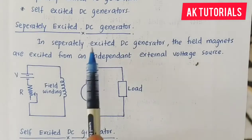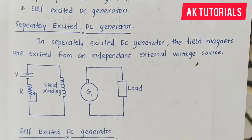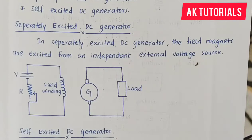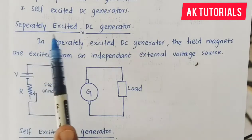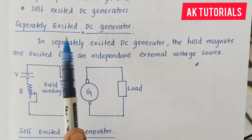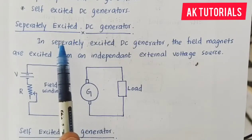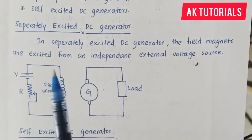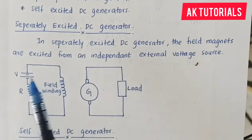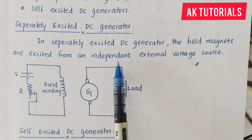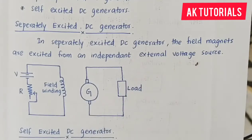In a separately excited DC generator, the field magnets are excited from an independent external voltage source. This external voltage source supplies the field, making it a separately excited type of generator.